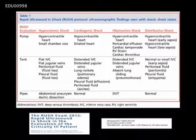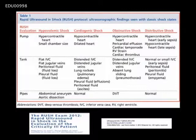In the last video I showed this table, which encompasses a lot of information. Let's focus on line one and we can see how evaluation of the pump can further assess which type of shock our patient has by seeing characteristic findings of the heart within the four categories of shock. Hopefully we'll begin to make more sense of this table by moving through this first video.